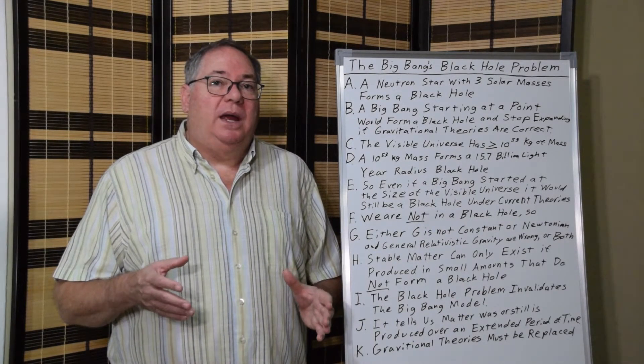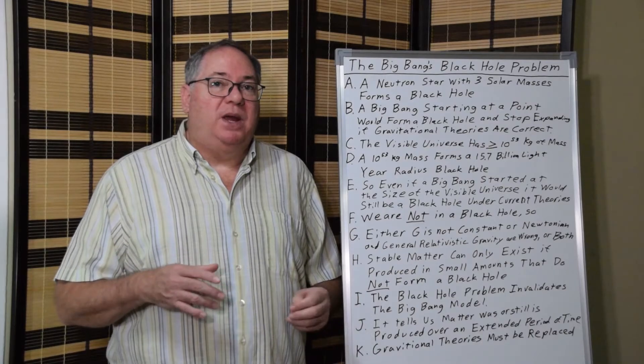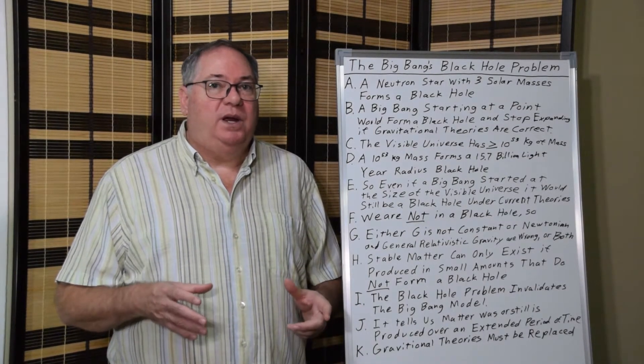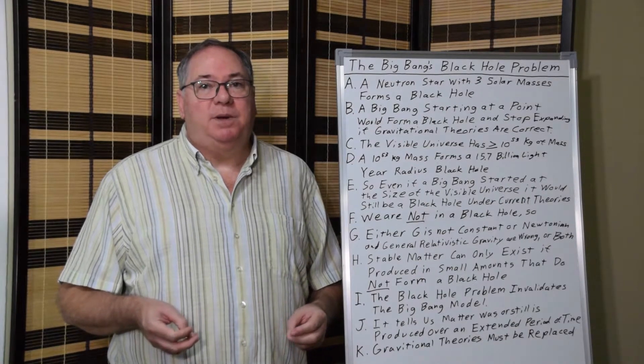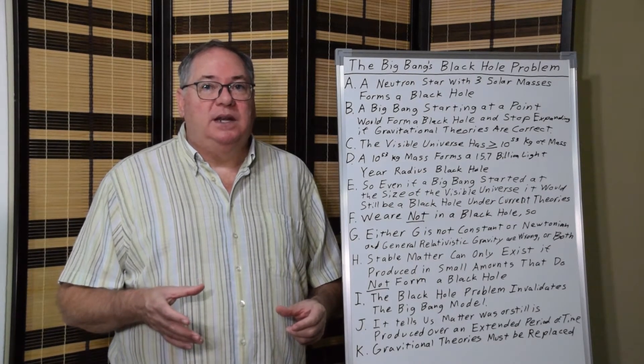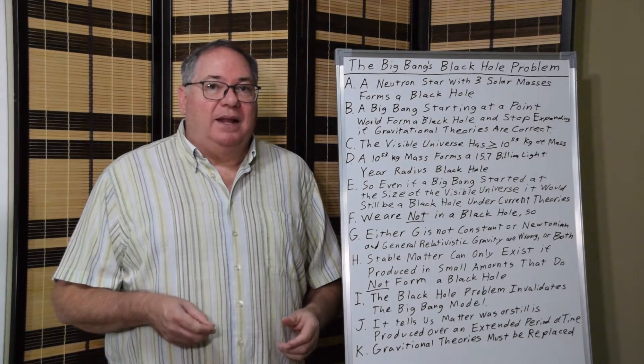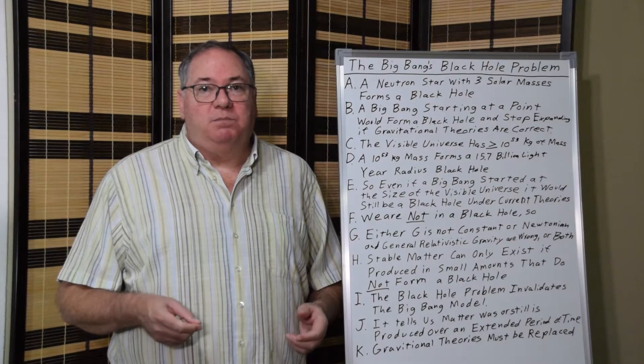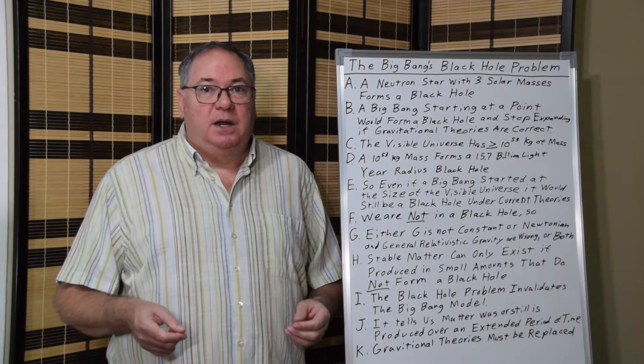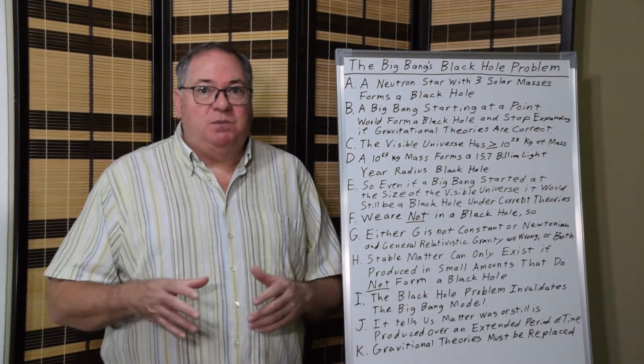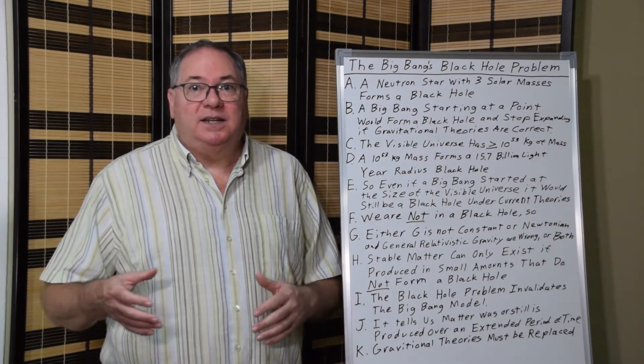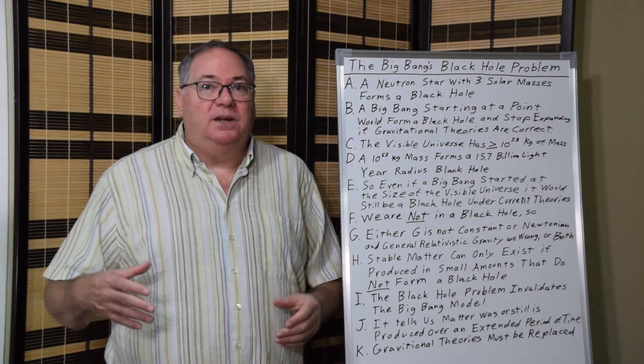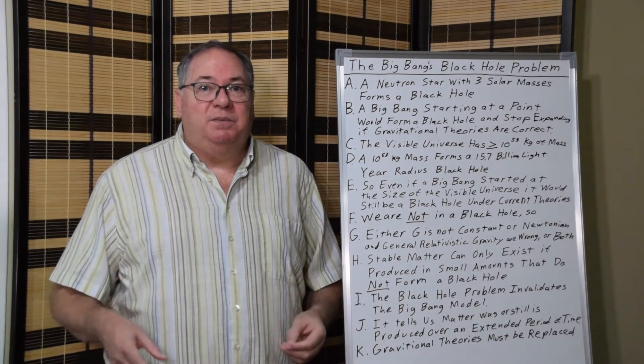So when we go back to the matter production problem, in order to avoid black holes, matter must be produced in small quantities so that black holes aren't produced. And that favors a cosmological model where there's more continuous production, where matter is produced in small, say star-sized amounts of matter that can be broken up into planets later when stars die.